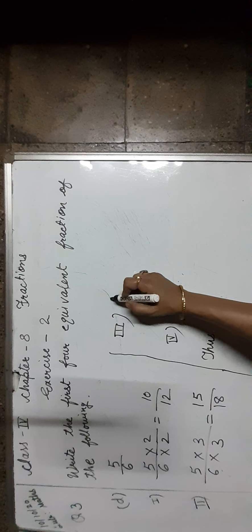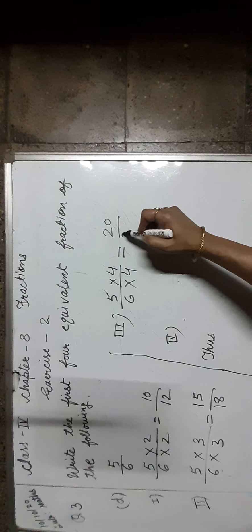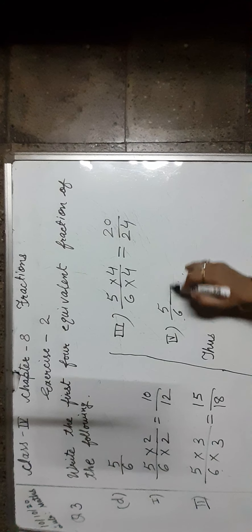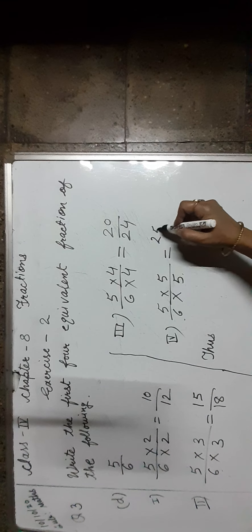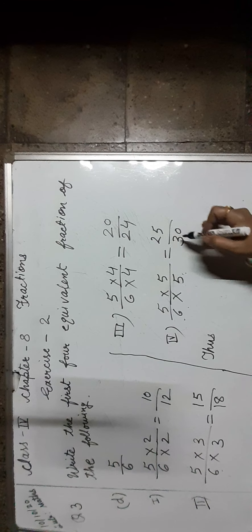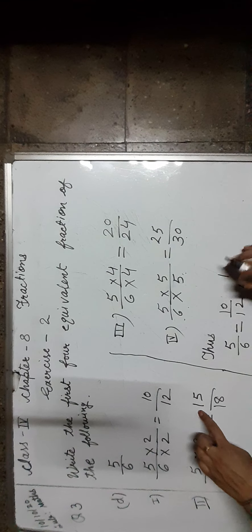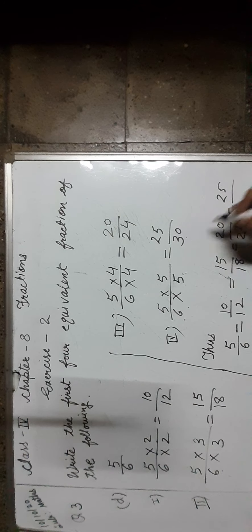For the third equivalent fraction of 5 upon 6, we multiply by 4 in numerator and denominator, which is equal to 20 upon 24. For the fourth equivalent fraction, we multiply both numerator and denominator by 5: 5 fives are 25, 6 fives are 30, giving 25 upon 30. Thus, 5 upon 6 is equal to 10 upon 12, 15 upon 18, 20 upon 24, and 25 upon 30.